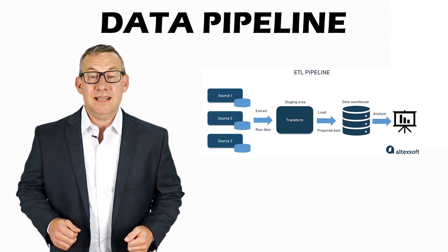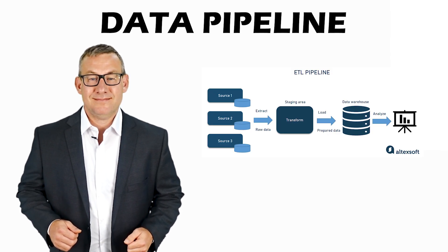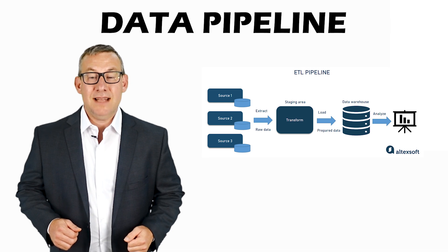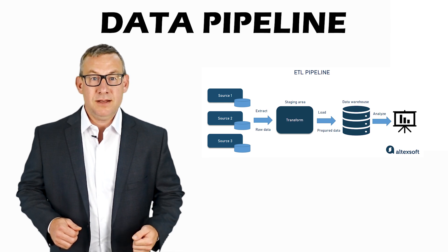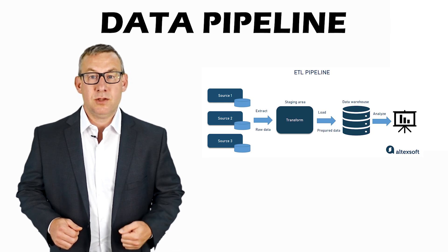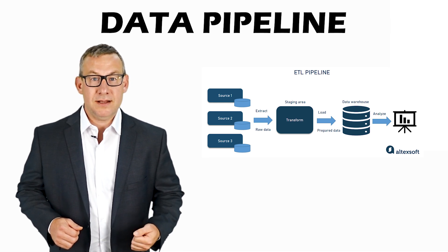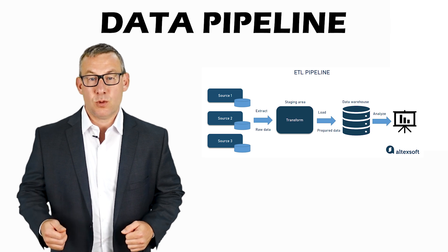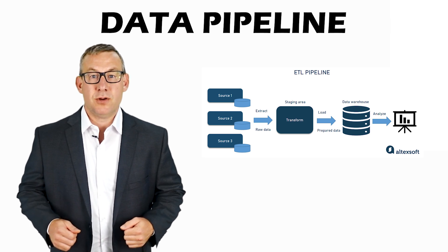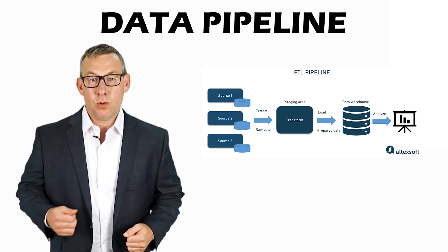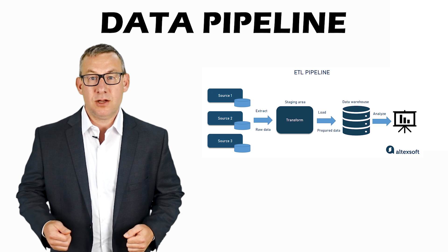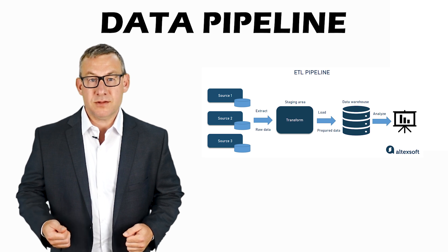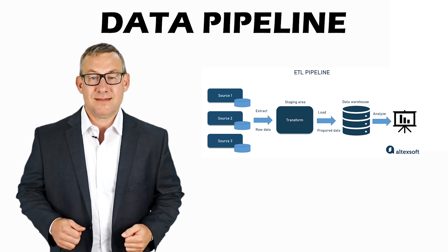A data pipeline is a method where raw data is ingested from data sources, transformed, and then stored in a data lake or data warehouse for analysis.